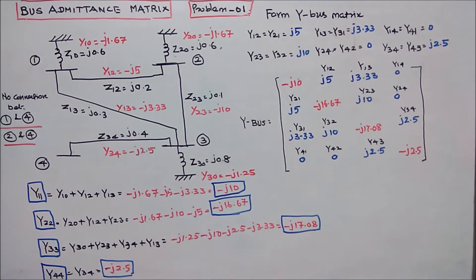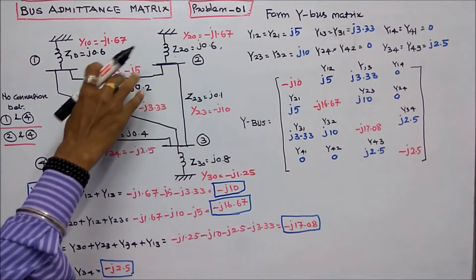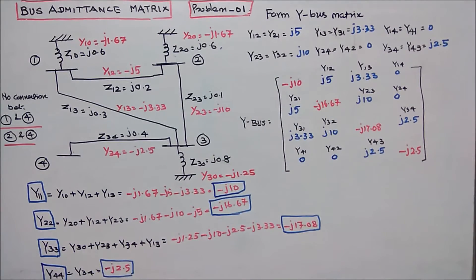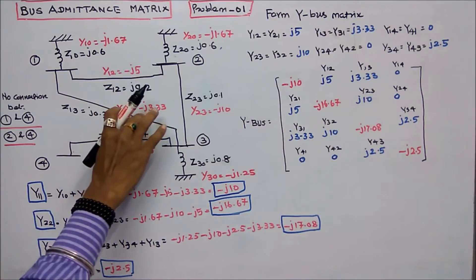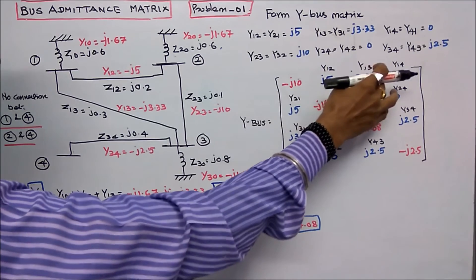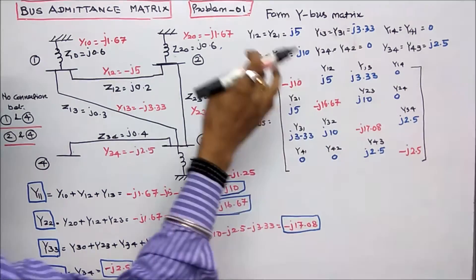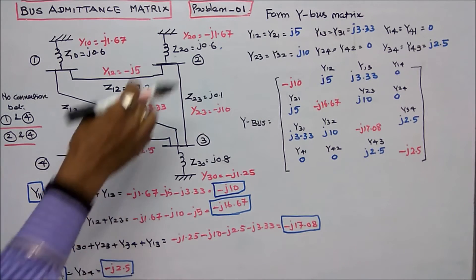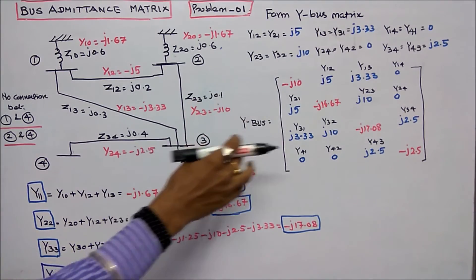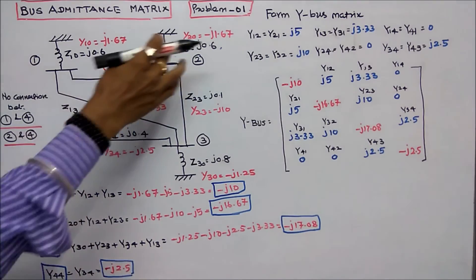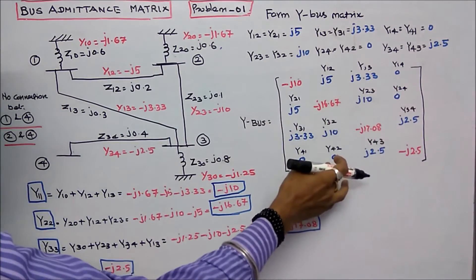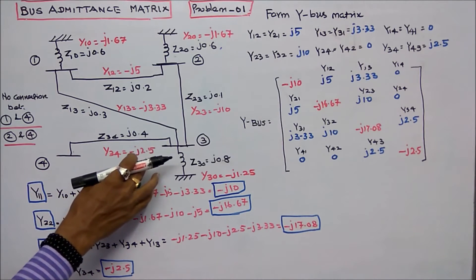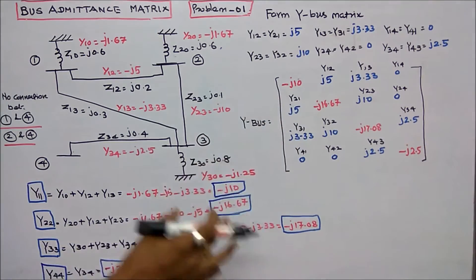Next, we find the off-diagonal elements. Y12 = −(−j5) = j5; Y21 = j5. Y13 = −(−j3.33) = j3.33; Y31 = j3.33. Y14 = 0 (no element); Y41 = 0. Y23 = −(−j10) = j10. Y24 = 0; Y42 = 0. Y34 = j2.5; Y43 = j2.5. This gives the complete Y bus matrix for the system.